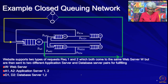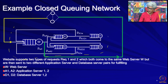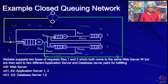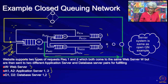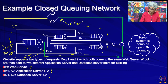Let us look at this example closed queuing network. If you remember the example of the open queuing network, you will quickly realize that this server system looks quite familiar. We had the same description: a website that supports two types of requests which both come to the same web server, but then split into two different application server and database server subsystems. In the open system we simply had an arrival rate here and this part was an exit — an arrow going into nowhere. Now we have an explicit client node.